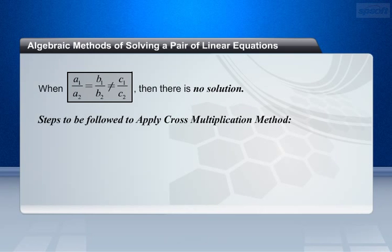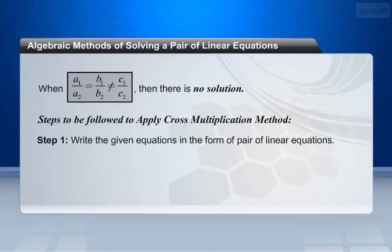For solving a pair of linear equations by this method, the following steps are considered. Step 1: Write the given equations in the form of pair of linear equations, i.e., a1 x plus b1 y plus c1 equals 0, make it as equation 1. a2 x plus b2 y plus c2 equals 0, make it as equation 2.